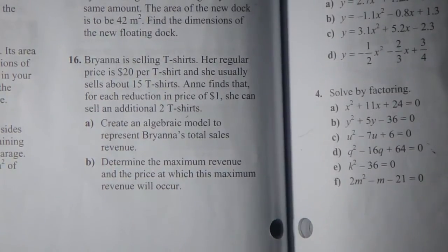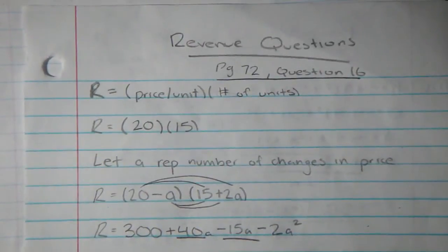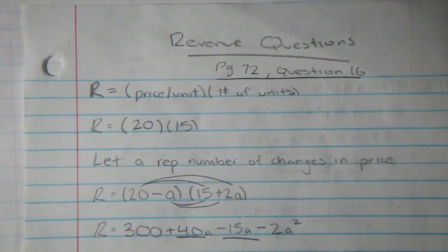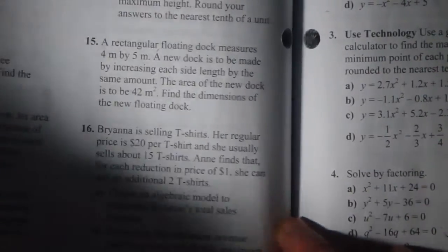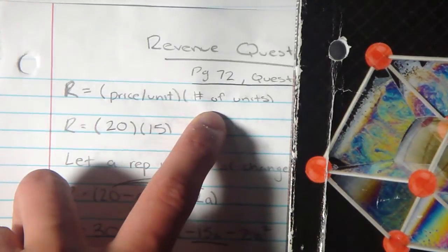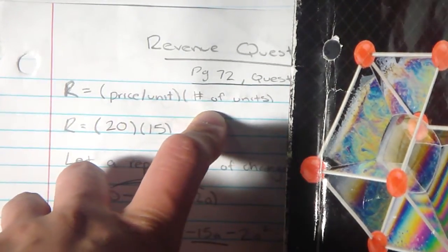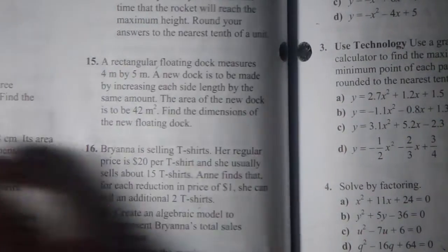Part A: create an algebraic model to represent Brianna's total sales revenue. Part B: determine the maximum revenue and the price at which this maximum revenue will occur. Whenever I do revenue word problems, I always start off with the basic revenue equation: price per unit multiplied by number of units. The price per unit is $20 per t-shirt, and she sells about 15 t-shirts.